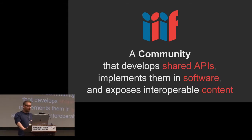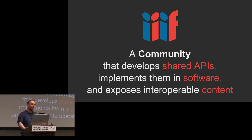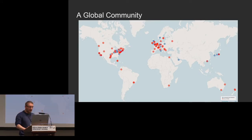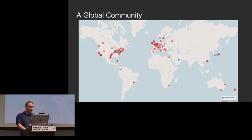Mostly it's a community that develops shared APIs — application programming interfaces — implements them in software and exposes interoperable content. We have a hard rule that every spec feature has to have at least two independent implementations, so we don't spend time describing specifications that don't go anywhere. It's also a global community; this slide shows adopters or contributors to IIIF across the world, focused around the majority world but expanding into other areas.